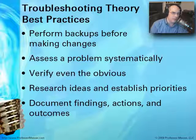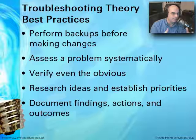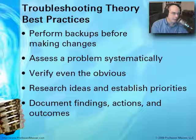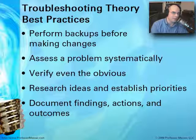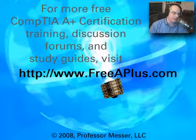That's our troubleshooting theory best practices. Make sure you back up all the time and that all changes are something you can roll back. When you get a big problem, use that systematic process and break it down into smaller pieces. Make sure it's not something obvious — fix those things right off the bat. Have all your research resources in front of you to prioritize what to do first, second, and third. And ultimately, when you're finished, document all of those findings so someone can go back later and see what you did to resolve the problem. That ends this module on the free A-plus certification course. For more, visit freeaplus.com for message boards, forums, and more A-plus certification resources.